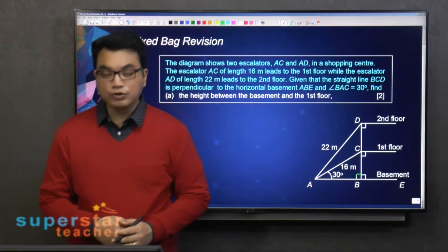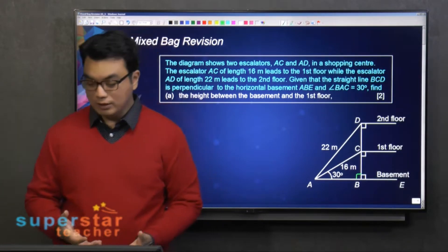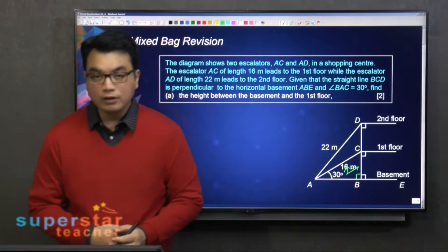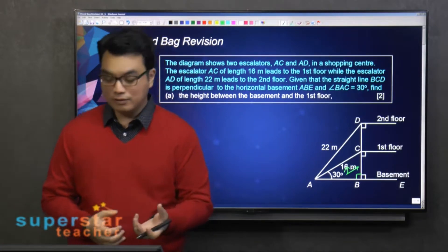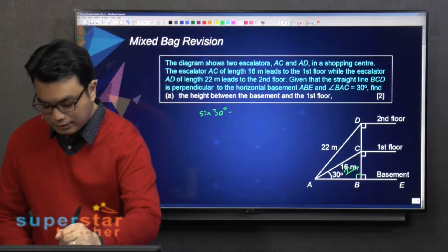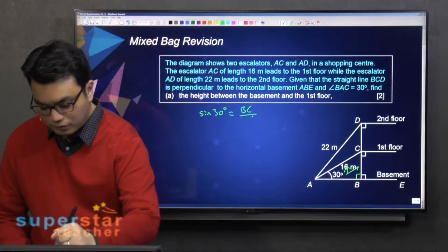This is a right-angled triangle. We have to use trigonometry. Opposite over hypotenuse. Why is that? Yes, sine. Alright, so sine 30 degrees equals BC over 16.